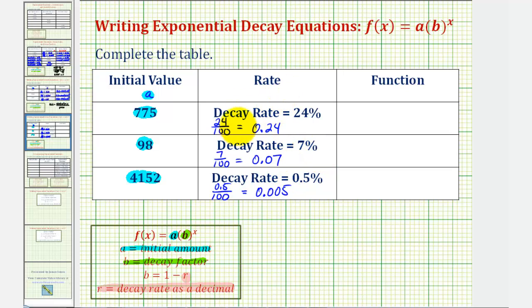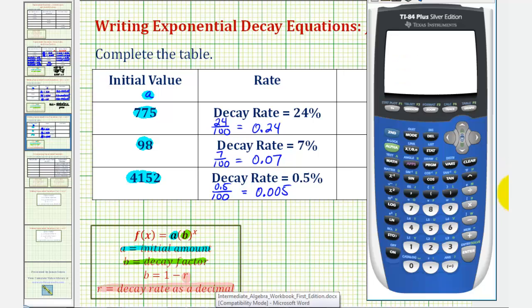Of course, if we need to, we can check these quotients on the calculator. Let's go and check this last one. 0.5 divided by 100 is equal to 0.005.